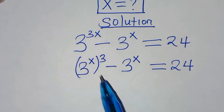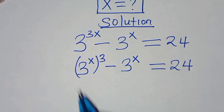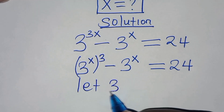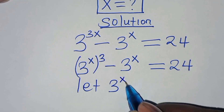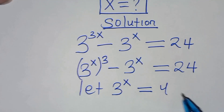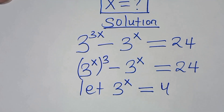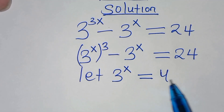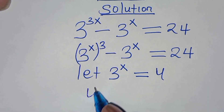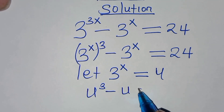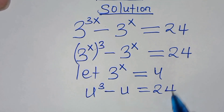Now, we have 3 to the power x here and 3 to the power x, so we can just say, let 3 to the power x be equal to u. Substituting this u here, we have u to the power 3, subtract u, this is equal to 24.